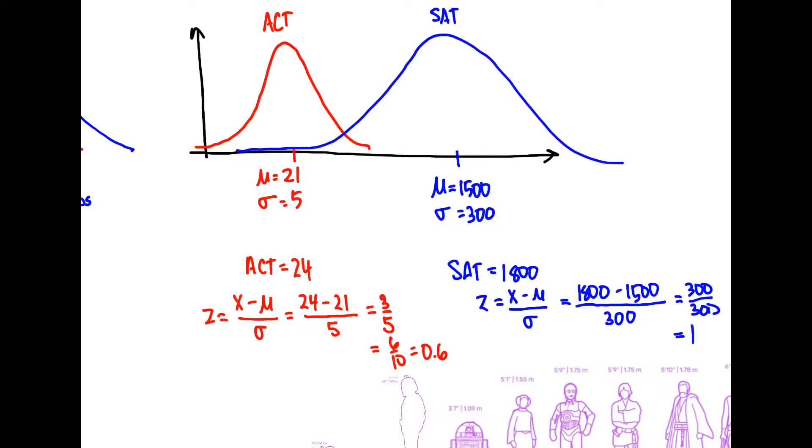So which person got the higher score? Well, this one had a z-score of 0.6 and this one had the z-score of 1. So this one is further away from the mean. It's actually one standard deviation away from the mean than this one, which is a little bit less, 0.6. So if you're going to go just based on the scores, you might want to admit this person.